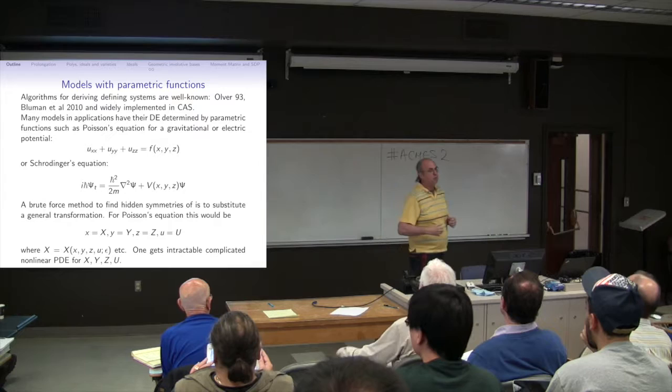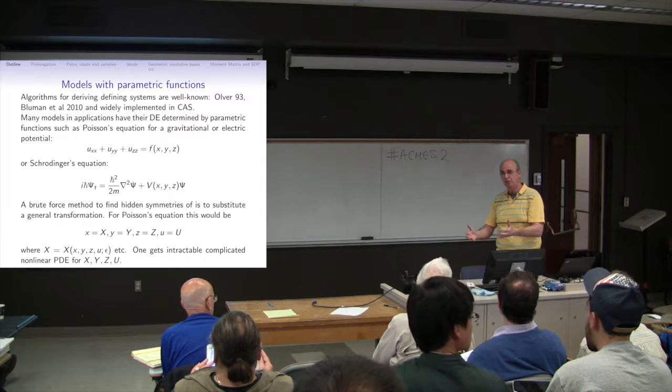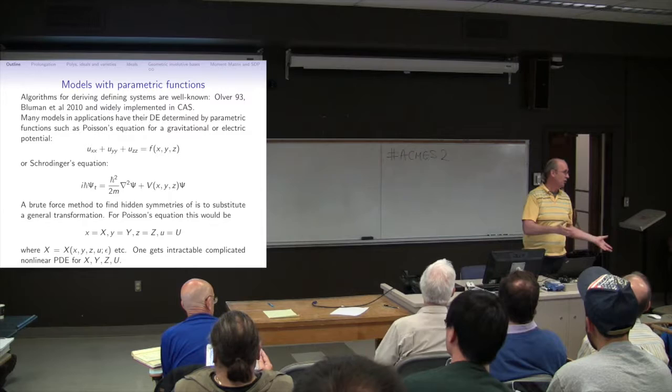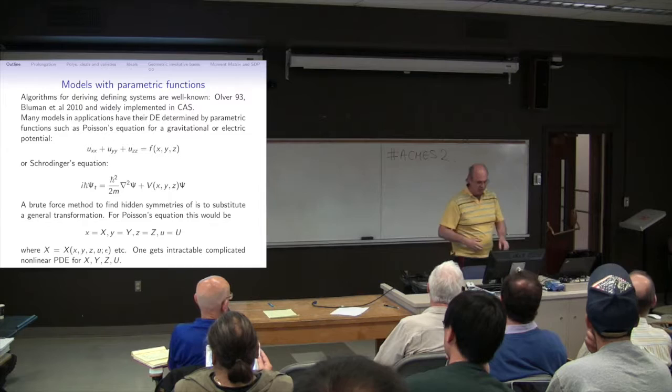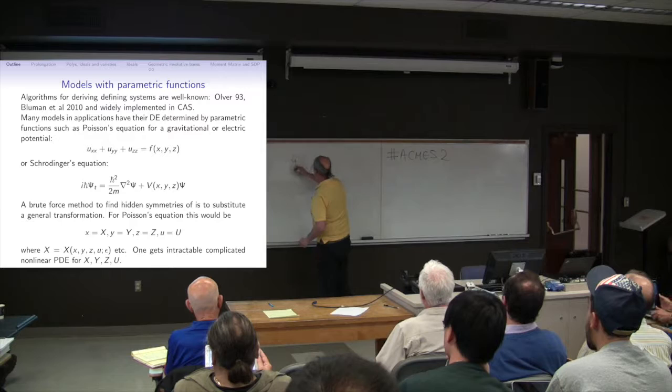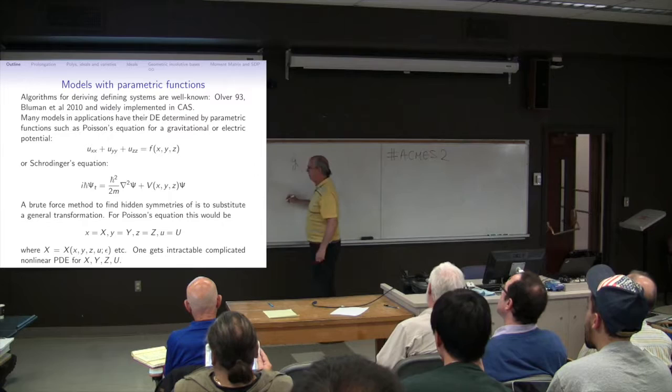So to find these hidden symmetries, the sort of brute force way would be just to say, give me a change of coordinates, substitute it into the differential equation, demand that the differential equation remains unchanged after the substitution. And what you get from that, if you take general functions, is a kind of a non-linear mess. So if you're doing this, you're working at the level of the group, and you get non-linear equations for the transformations, and it's really nasty.